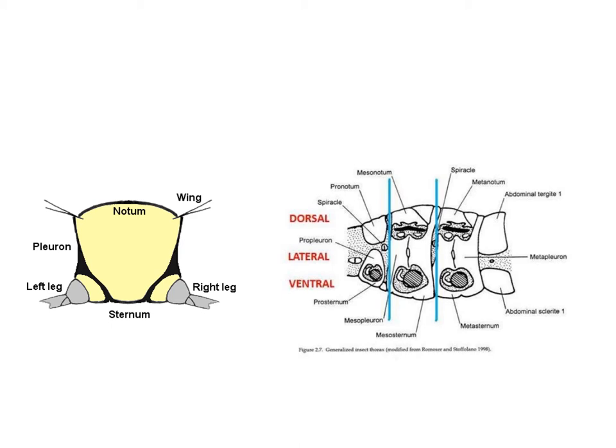Here we can see the notum, the sternum, and in between, the lateral plate called pleuron. We can also see how the wings are attached in the pleural area. There are three parts: the pro-sternum, meso-sternum and meta-sternum. The dorsal, lateral and ventral sides can also be seen. We can also see the spiracles, pro-notum, meso-notum and meta-notum. The pro-pleural, meso-pleural and meta-pleural areas can also be seen here.